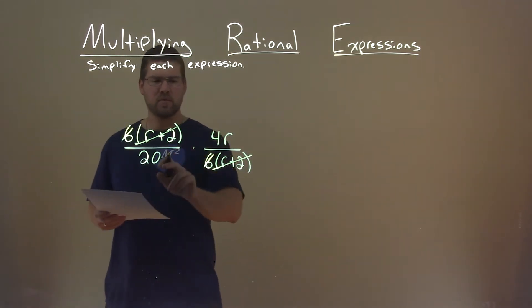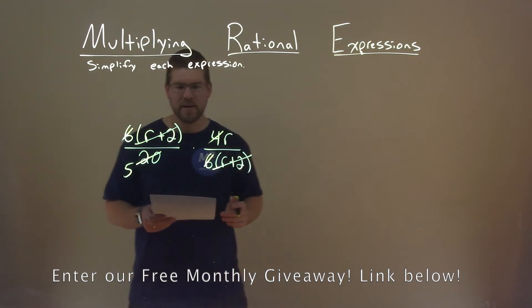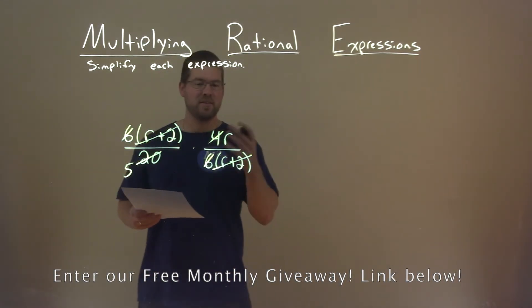What about 20 and 4? Well, 4 goes into 20, 5 times, cancel out that 4, and we'll pretty much simplify this. It's actually pretty easy.